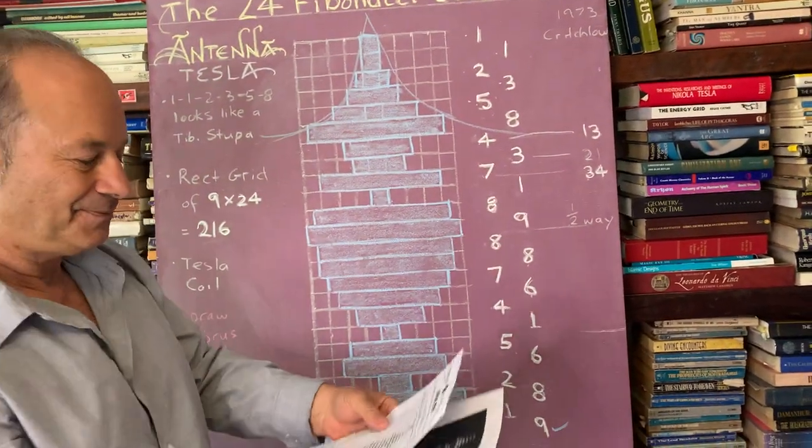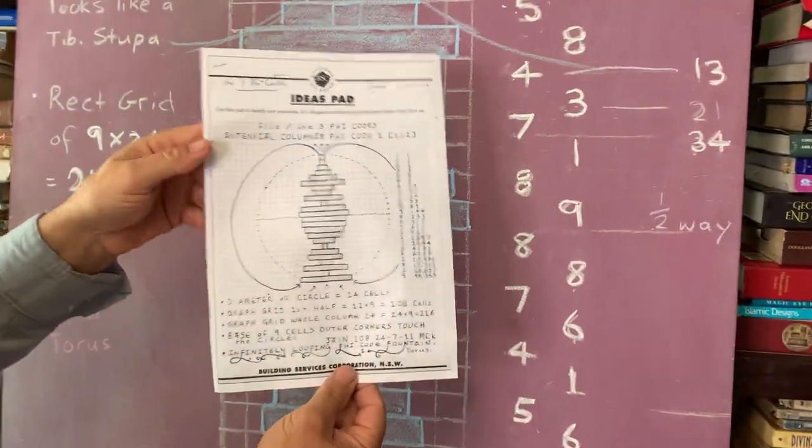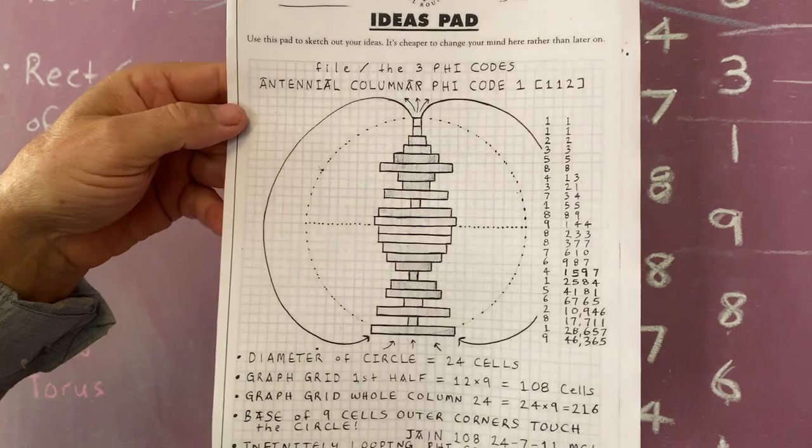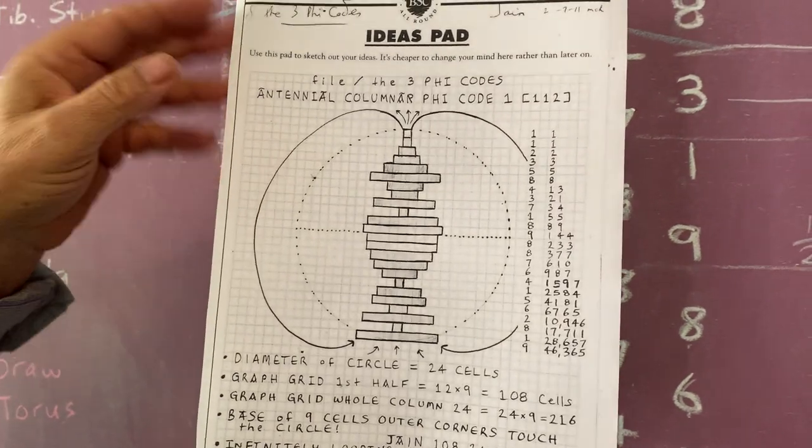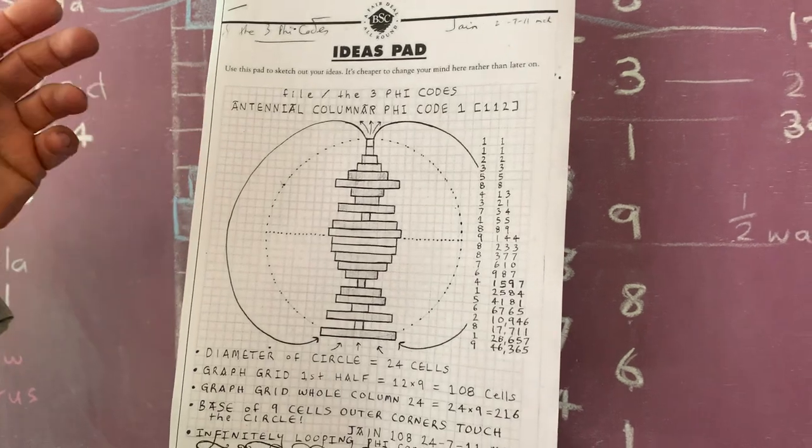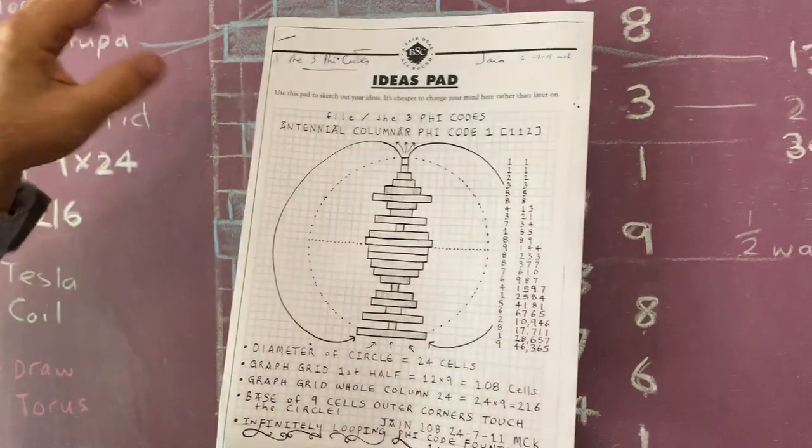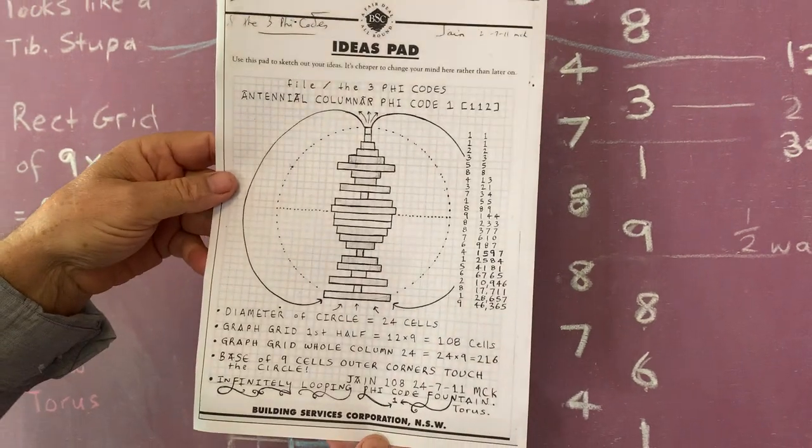So just to show you what I've done is that I originally drew this in 2011 as a sketch. So you can see, this is my style. I work on graph paper. I called it the antennal columnar phi code one and there's three phi codes. So this is just one of other possible coils.